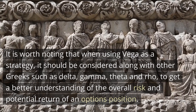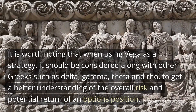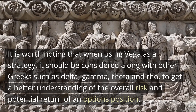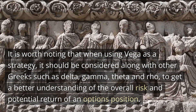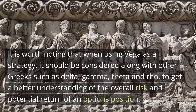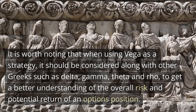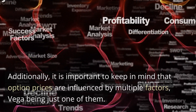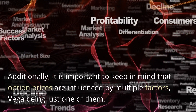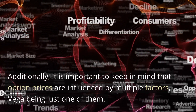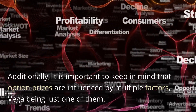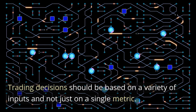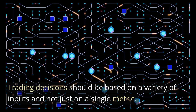When using VEGA as a strategy, it should be considered along with other Greeks such as delta, gamma, theta, and rho, to get a better understanding of the overall risk and potential return of an options position. Additionally, it is important to keep in mind that option prices are influenced by multiple factors, VEGA being just one of them. Trading decisions should be based on a variety of inputs and not just on a single metric.